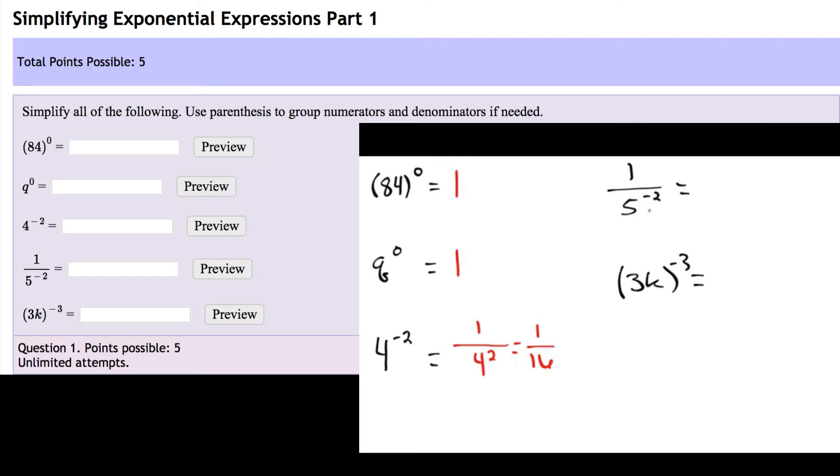Same issue here on this next problem, 1 over 5 to the power of negative 2. We don't like negative exponents, so we're going to take that whole term up top and just make it 5 to the power of 2 over 1, which 5 squared is 25, and 25 over 1 is 25.